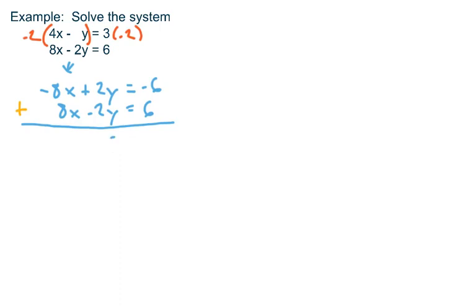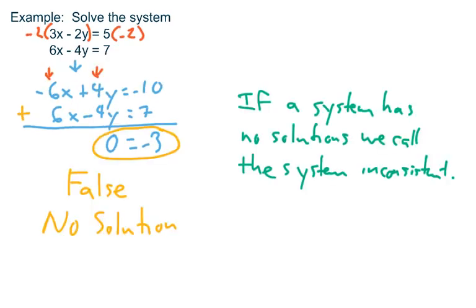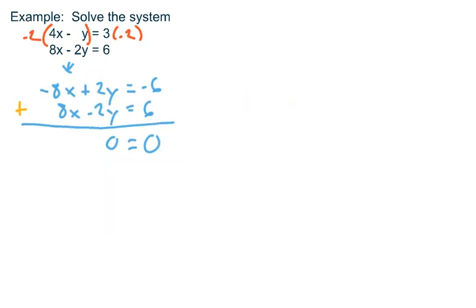And on the right term you also get a 0. So again, all the variables disappear but this is not the same thing as what happened in the previous example. In the previous example we ended up with a statement that's false. In this system we end up with a statement that is true. So this is always true.